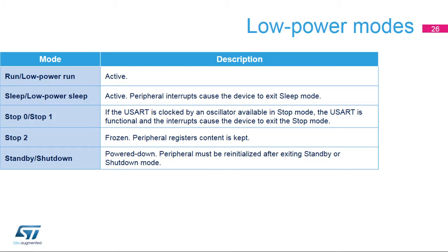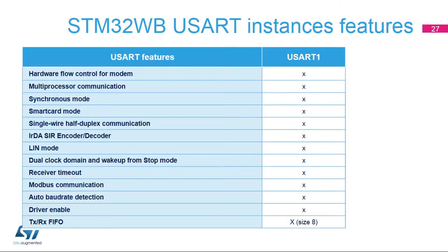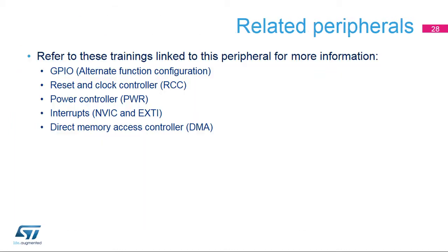The USART peripheral is active in Run Mode. USART interrupts cause the device to exit Sleep Mode. The USART is able to wake up the MCU from Stop Mode when the USART clock is set to HSI, LSE, or CSI. In Standby Mode, the peripheral is in power down and must be reinitialized after exiting Standby or Shutdown Mode. The STM32WB devices embed one USART instance which is full-featured. For more information, please refer to related trainings on GPIO, Reset and Clock Controller, Power Controller, Interrupt Controller, and Direct Memory Access Controller.